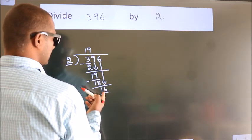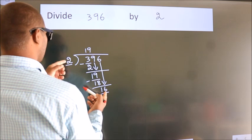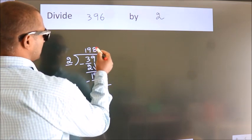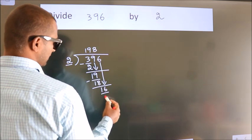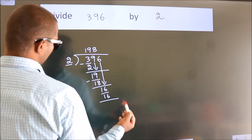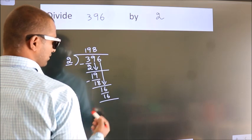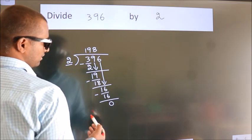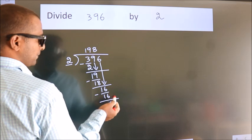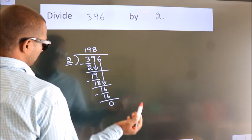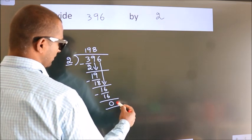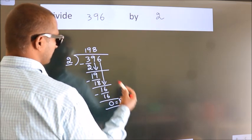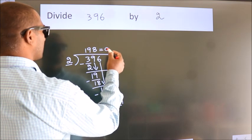When do we get 16 in the 2 times table? 2 eights are 16. Now we subtract; we get 0. No more numbers to bring down, so we stop here. This is our remainder, and this is our quotient.